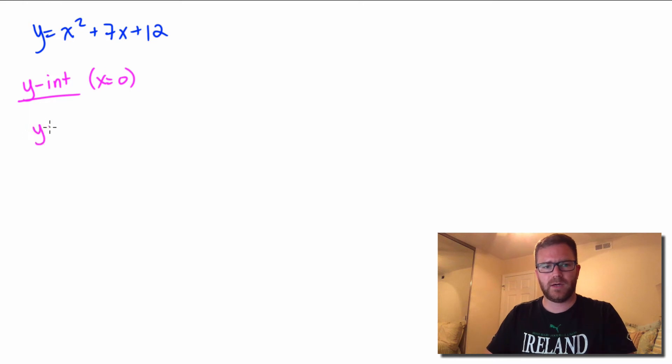So we get y equals zero squared plus 7 times zero plus 12, and then simplify this. So zero squared is just zero, so we get y equals zero. Seven times zero is zero, and there we go. So zero plus zero plus 12 is just 12.